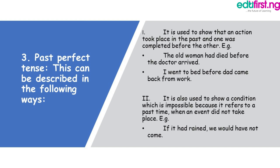It is also used to show a condition which is impossible because it refers to past time when an event did not take place. It talks about an event that was supposed to have taken place but did not. So you're kind of thinking back. 'If it had rained, we would not have come.' It's telling someone that if the rain actually fell, you wouldn't have seen me — the rain would have been a hindrance to my coming. But he or she came because the rain did not fall.